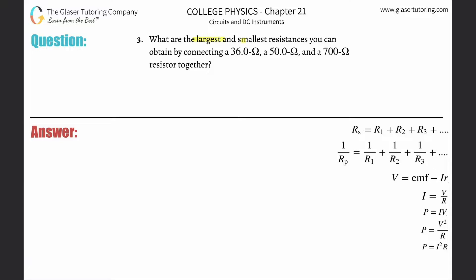Number three: What are the largest and smallest resistances you can obtain by connecting a 36 ohm, 50 ohm, and 700 ohm resistor together? The largest resistance will always come from the resistances being connected in series, and the smallest will always be from resistances connected in parallel.